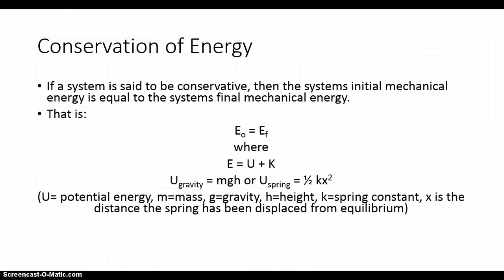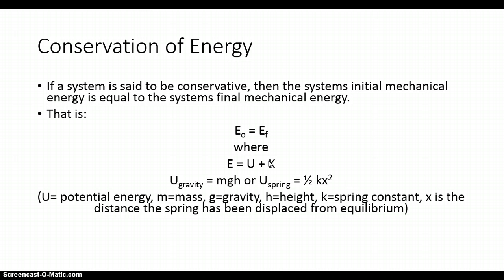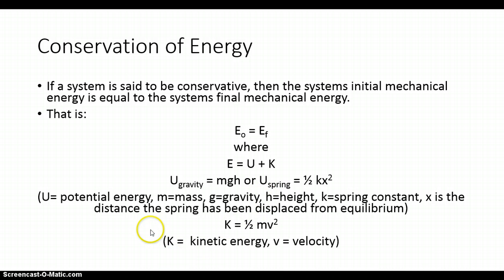M in the equation is mass, G is gravity, H is height. The lowercase k is the spring constant — each spring has its own spring constant — and X is the displacement, or the distance the spring has been displaced from equilibrium. Capital K in our total mechanical energy equation is equal to one-half mv squared, where m is mass and v is velocity. We use capital K for kinetic energy.